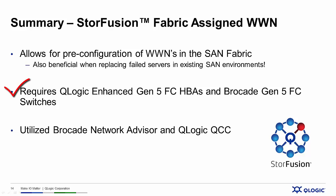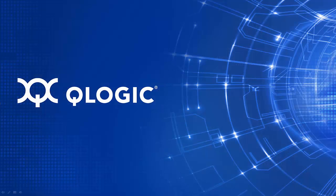Remember that for this functionality you need QLogic Enhanced Gen5 Fiber Channel HPAs and Brocade Gen5 Fiber Channel Switching Fabric. The applications utilized to manage all of this are the Brocade Network Advisor utility along with QLogic's QConverge Console. That's it for this edition of StoreFusion Introduction by QLogic — thank you for your time and attention, and have a great rest of your day.